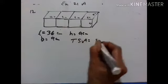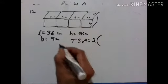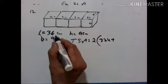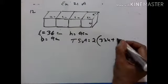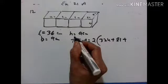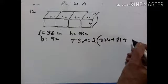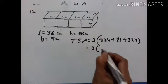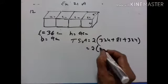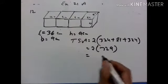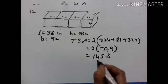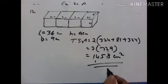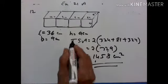Total surface area is equal to 2 into (length × breadth + breadth × height + height × length). 36 into 9 is equal to 324, plus breadth into height — 9 into 9 is 81, plus height into length — 36 into 9 is 324. That gives 2 into 729, equal to 1458 centimeter square. That is the total surface area of this cuboid.